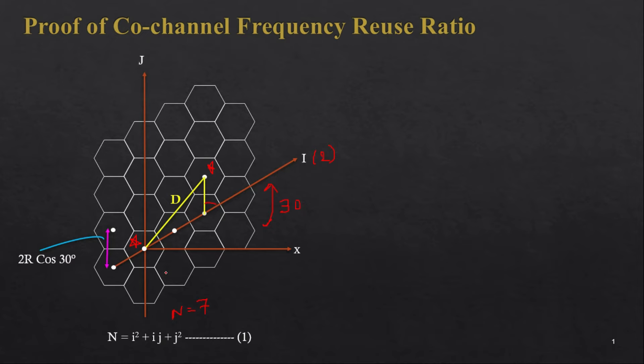One more thing: the center distance between two cells is given by 2r·cos30, where r is the radius of one cell. So you can understand that if this angle is 30 degrees, then the distance between the two cell centers will be 2r·cos30.